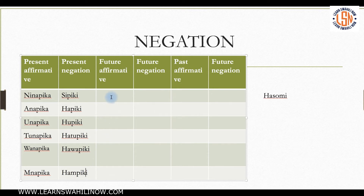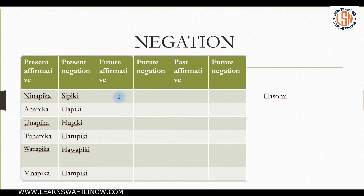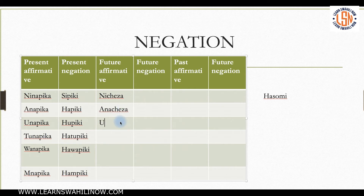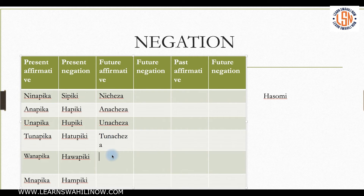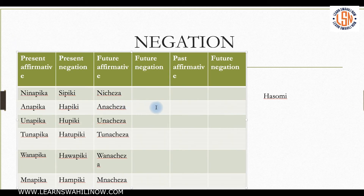Now let's move to the future tense. We'll use the verb 'cheza' — to play. The future tense marker is 'ta.' So: nitacheza, atacheza, utacheza, tutacheza, watacheza, mtacheza.